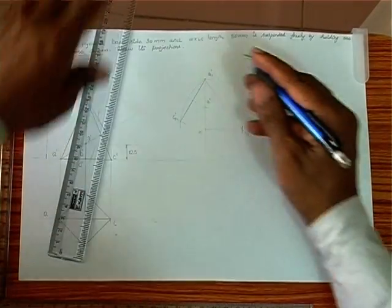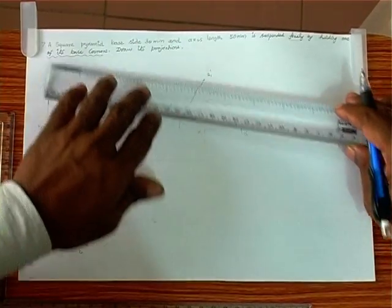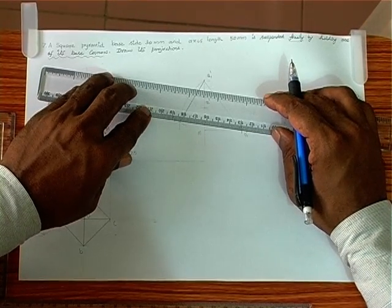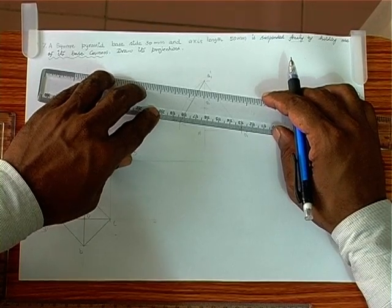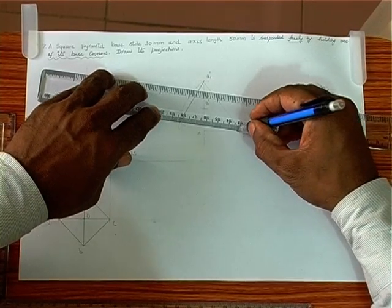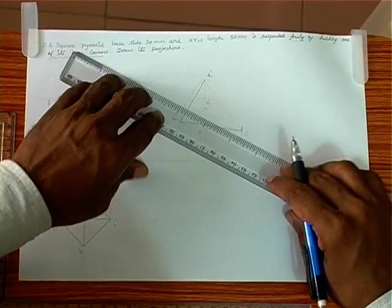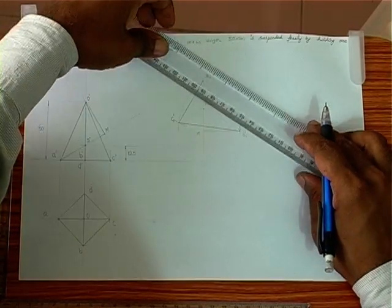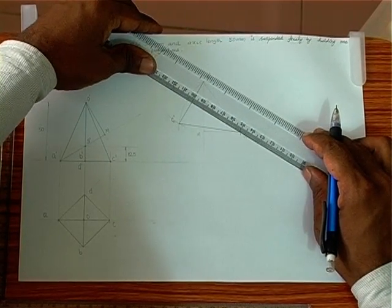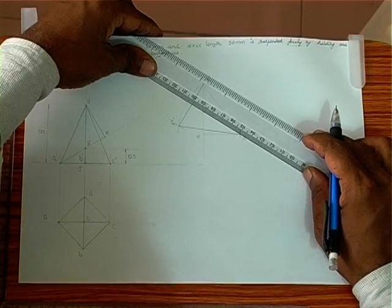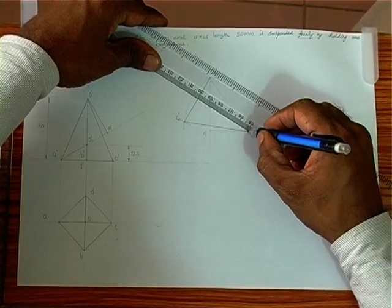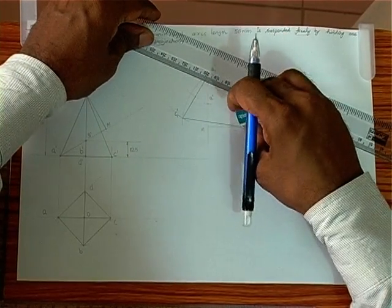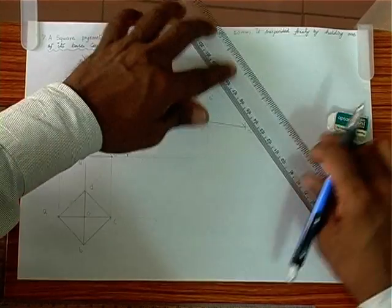We call it C1'. So now the square pyramid is ready for the freely suspended position in the front view. This is the new position of the square pyramid which is freely suspended, such that the line joining the corner and the center of gravity is strictly a vertical line.